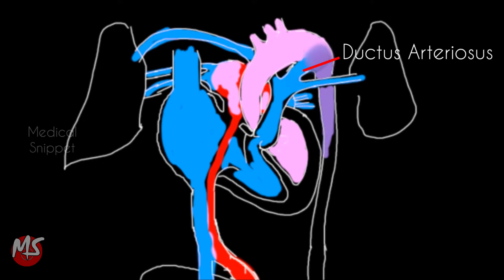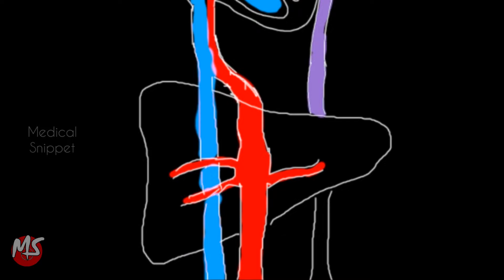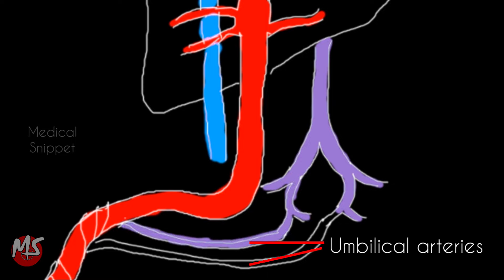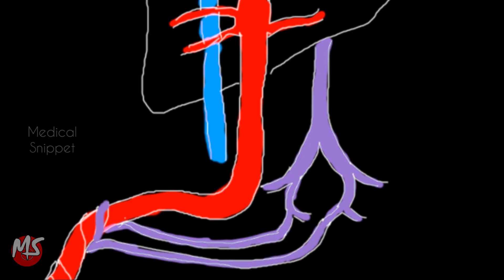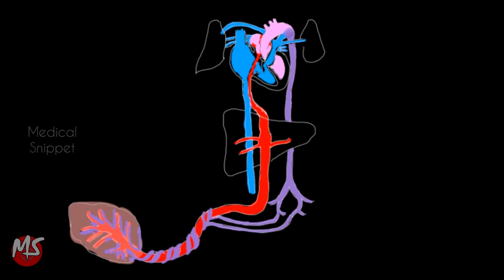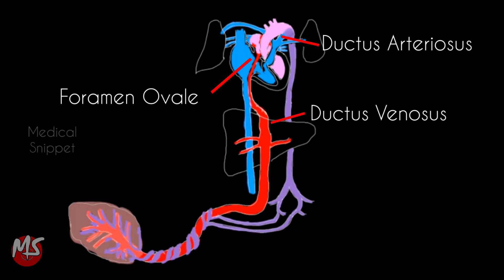The lower half of the body is thus supplied with relatively desaturated blood. The deoxygenated blood then reaches the placenta for oxygenation via the two umbilical arteries, which are branches of the internal iliac arteries. The parallel circulation and preferential blood streaming are possible due to three important shunts: namely the ductus venosus, foramen ovale, and ductus arteriosus.